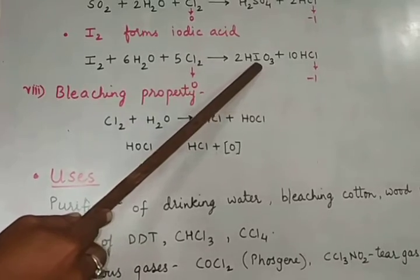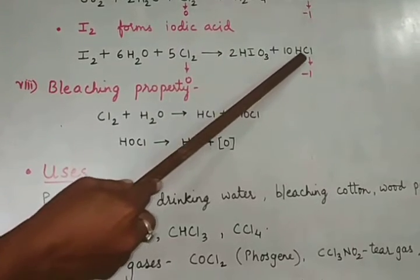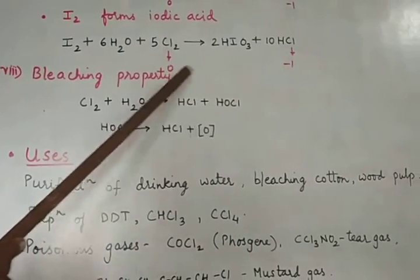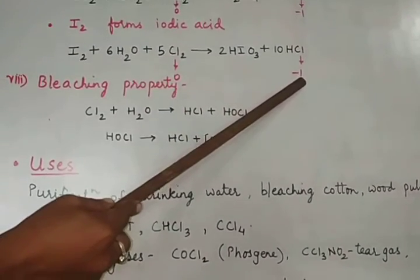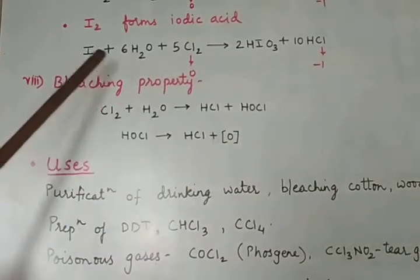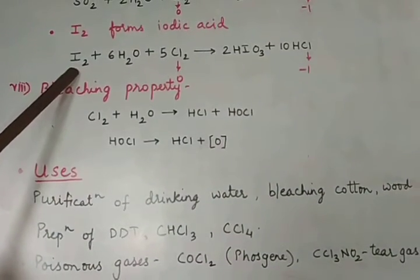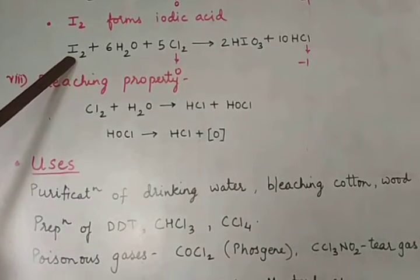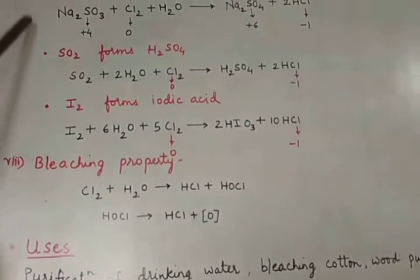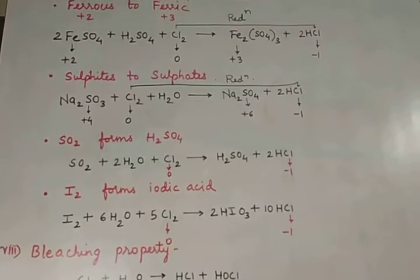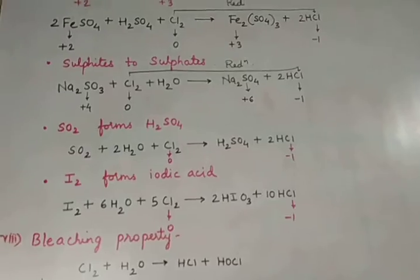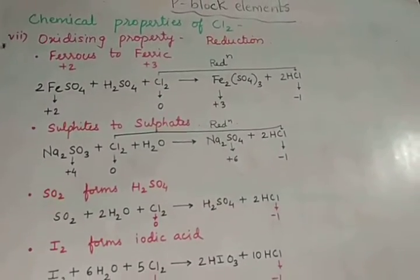Again, iodine (I2) in the presence of water, when treated with chlorine, forms iodic acid (HIO3) and HCl. Chlorine again goes from zero to minus one oxidation state, undergoing reduction, while iodine undergoes oxidation. Calculate the oxidation state of iodine as homework. In all four reactions, chlorine undergoes reduction, hence it acts as oxidizing agent — this is the oxidizing property of chlorine.